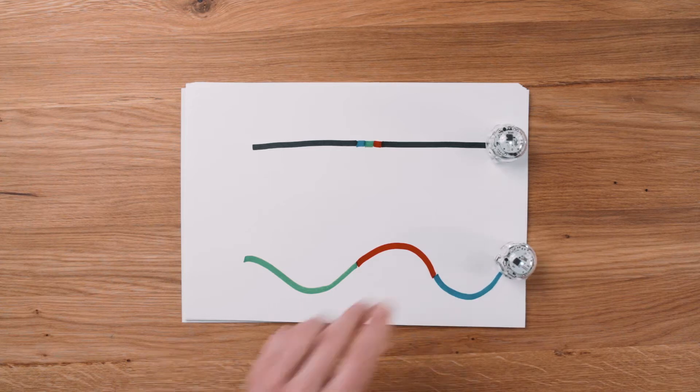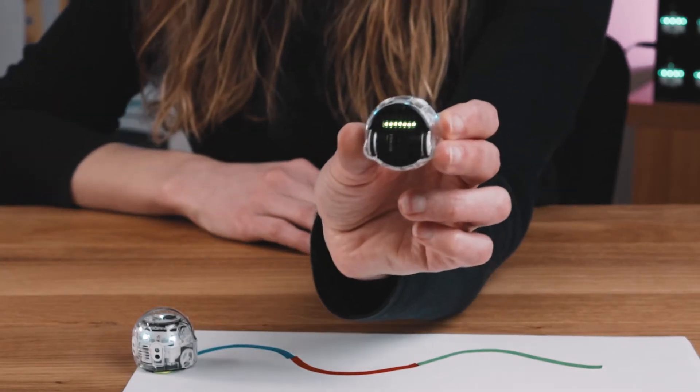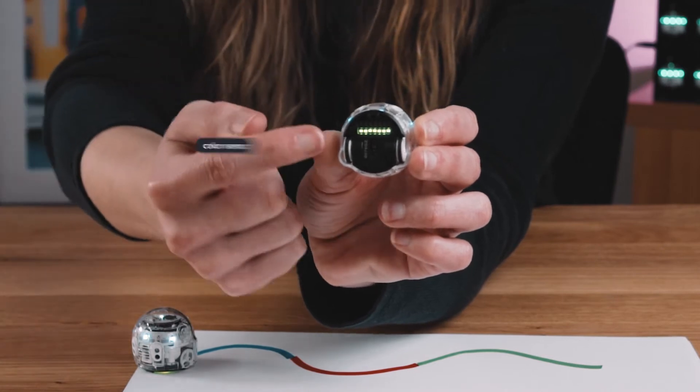Evo receives information about color as it follows a line using its color sensor.